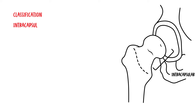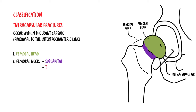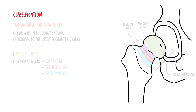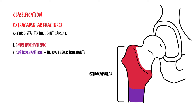Intracapsular fractures occur within the joint capsule, proximal to the intertrochanteric line. These can be further divided into femoral head fractures or femoral neck fractures, which are subdivided into subcapital, transcervical, and basicervical. Extracapsular fractures occur distal to the joint capsule and are divided into either intertrochanteric or subtrochanteric, below the lesser trochanter.